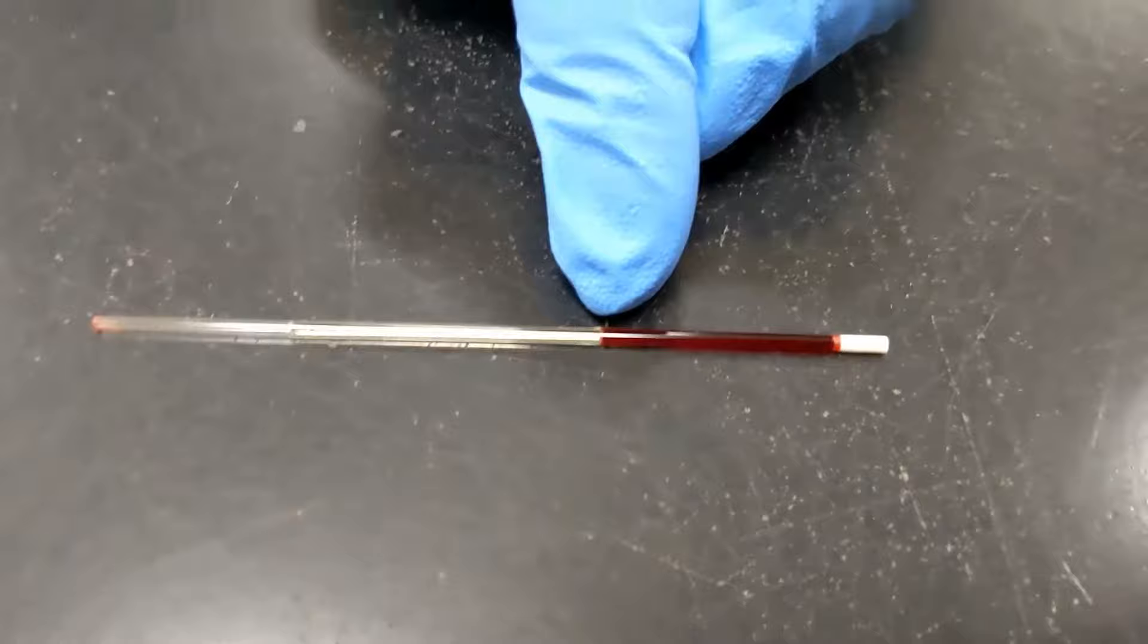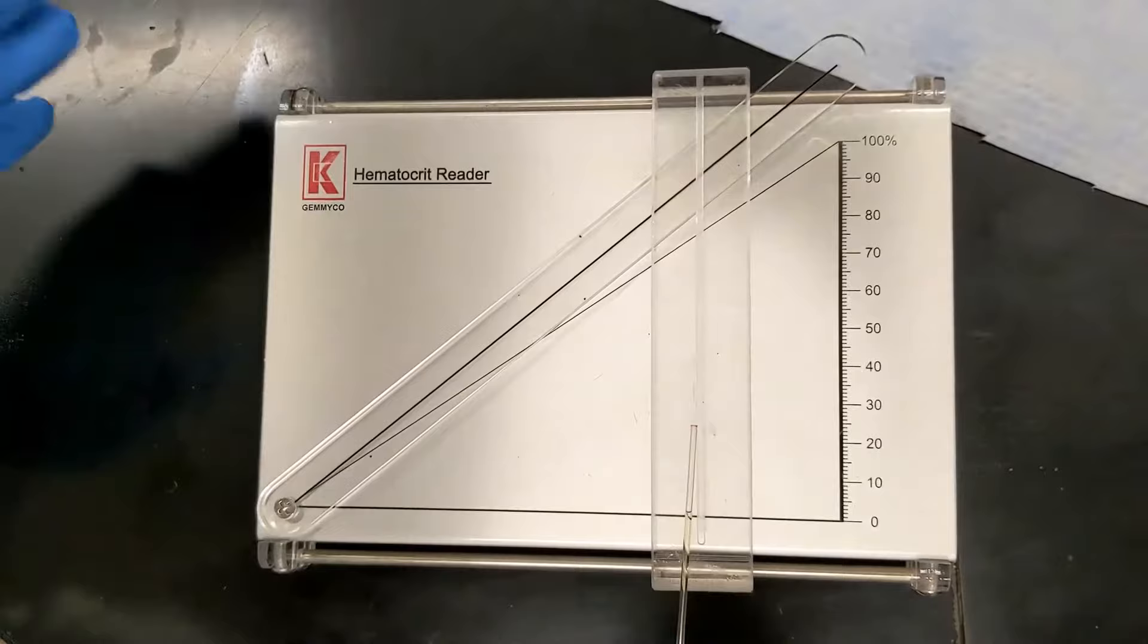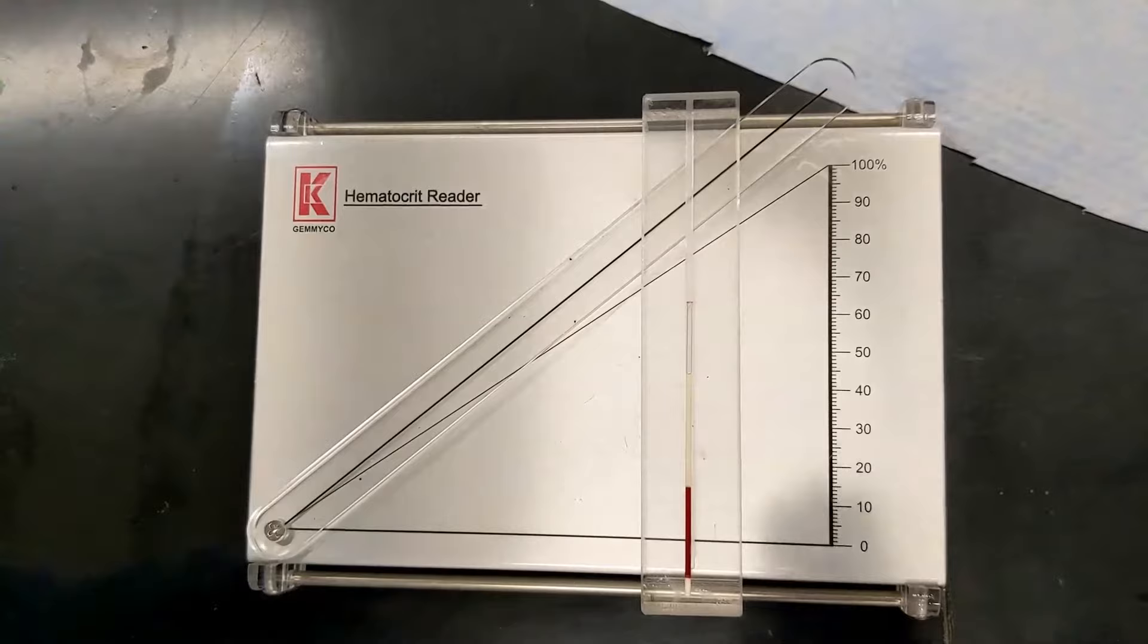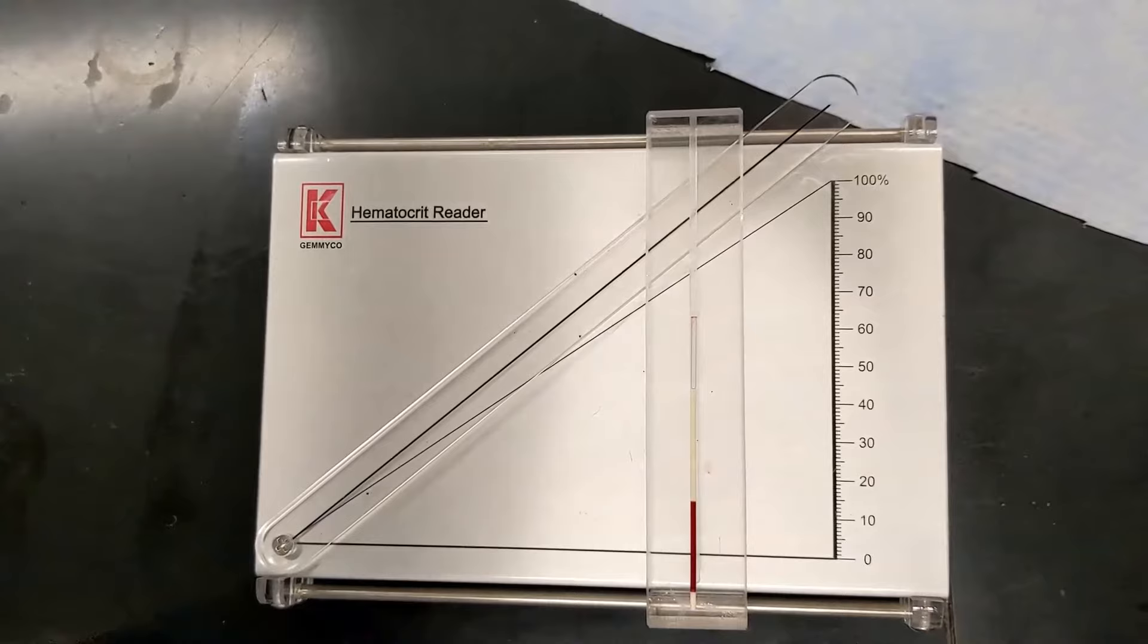This is the hematocrit reader. You'll see a lot of these in hospitals because it's easier than using a ruler and measuring total blood versus the amount of red blood cells or erythrocytes. You'll be doing that with your instructor as well, but here's how you use the reader.